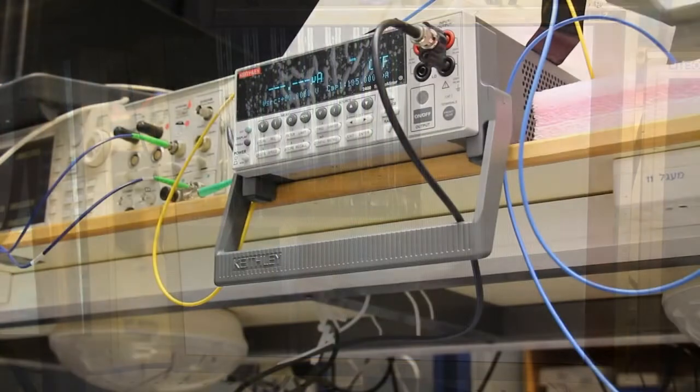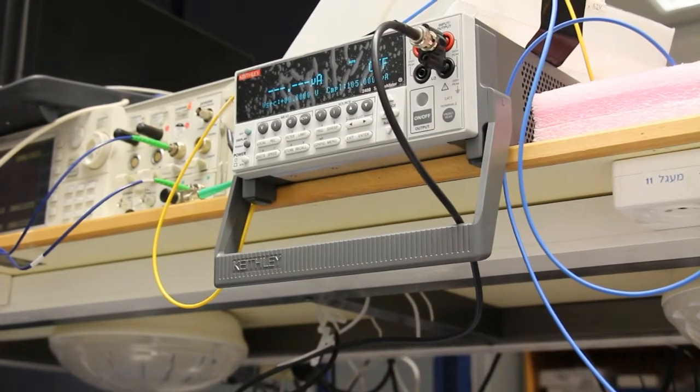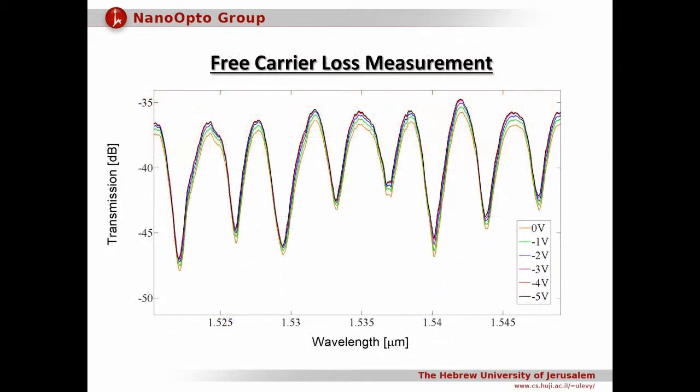Next we characterize the DC performance of the modulator by taking its transmission spectrum under different applied voltages. From these measurements we can clearly observe the shift in transmission spectrum. From this shift we can calculate the VπL to be 0.75 volt centimeter. Also we performed free carrier loss measurements by applying voltage to both arms of the interferometer. By doing so there is no shift in the spectrum and we can check the loss as function of the applied voltage.